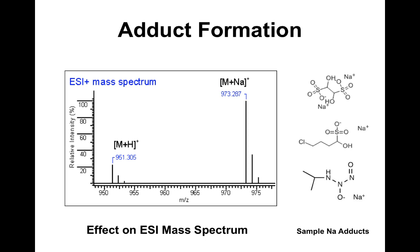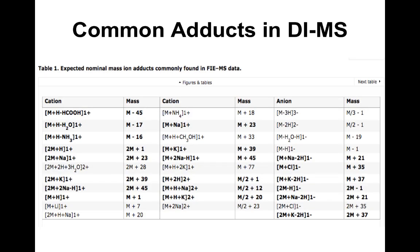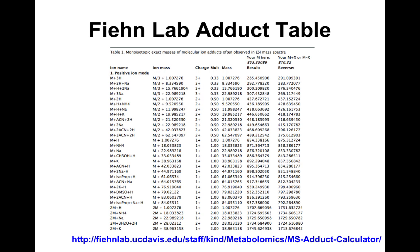In many cases you'll see multiple adducts and might think these are all different compounds. Various software tools help sort this out. The deconvolution process converts all these adducts into a single parent ion. Common adducts include cations, anions, and combinations of additions and subtractions. Oliver Fiehn has produced a popular table showing a long list of adducts with the mass added or subtracted.